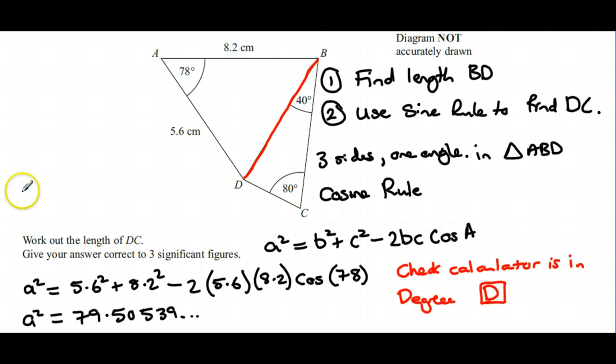What I can do now is try and find DC, and to find DC I'm going to use a sine rule. Once again, I'm going to use my own labeling, so this is the one I want to find—I'm going to call it a, which means that will be A. The other side I've already got I'm going to call B, so this will be B.